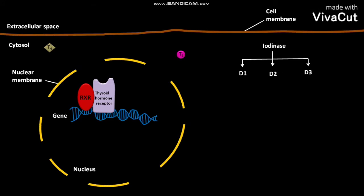Out of these three enzymes, only D1 and D2 deiodinize T4 to form T3. The T3s then enter into the nucleus.